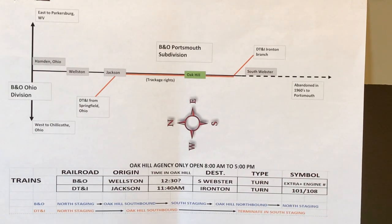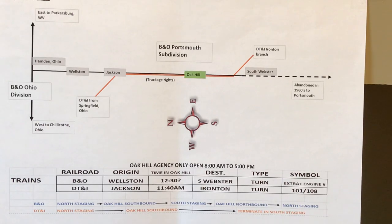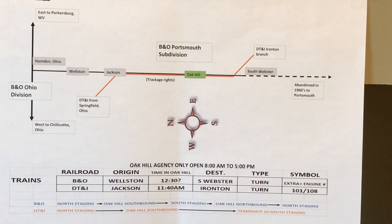I was researching some DT&I material because my original reason I got interested in Oak Hill was that I was going to model the DT&I Ironton branch. Going back through my DT&I files trying to figure out what time they went through Oak Hill, I found some emails from 2003 that I'd forgotten all about. One of them was actually Jim Hediger from Model Railroader, who modeled what he called the Hile Southern — his version of the DT&I — and I was asking him questions about Ironton. I've been interested in this area for a long time, but my focus has shifted from the DT&I to the B&O. Who knows — my next switching layout might be DT&I, maybe in Ironton. Just gotta get this one done first.